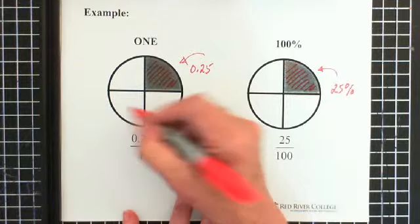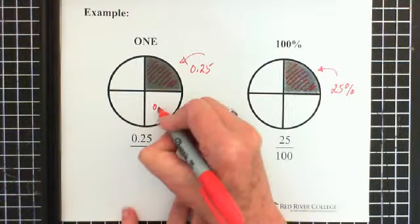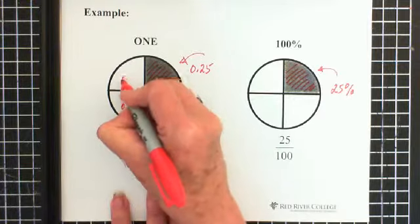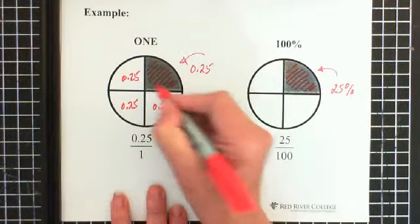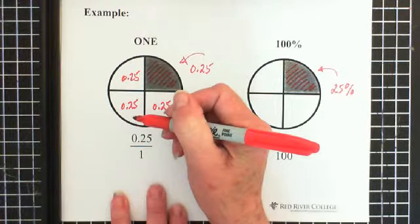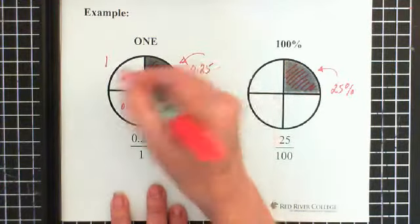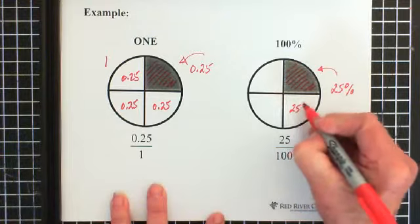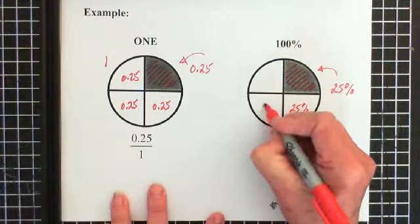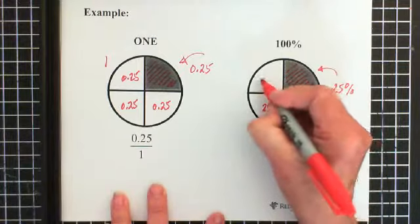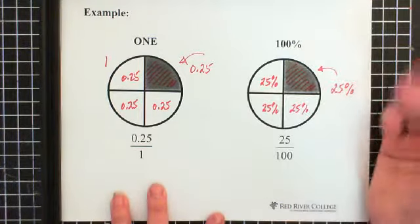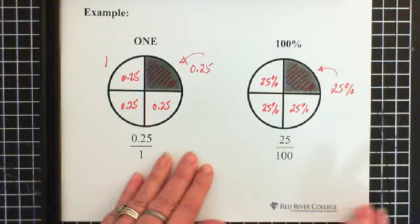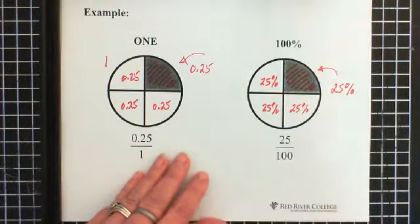And of course we have four of them. So we have 0.25 here, 0.25 here, and 0.25 here. Those four 0.25's add up to 1, which is what this is. Here we have 25%, we have 25% here, we have 25% here, and 25% here. And that all adds up to 100%, which is what this is talking about. So basically two different ways of describing the same thing.